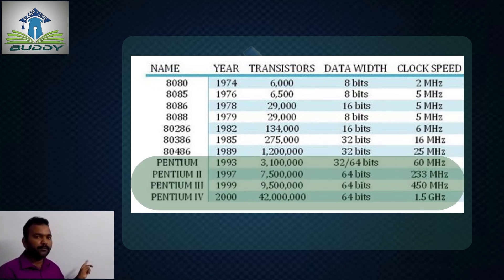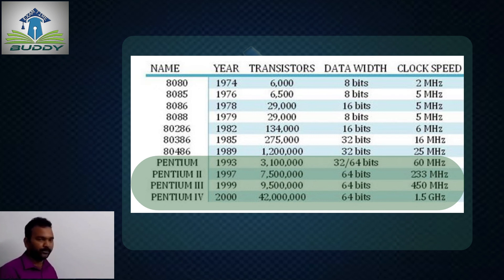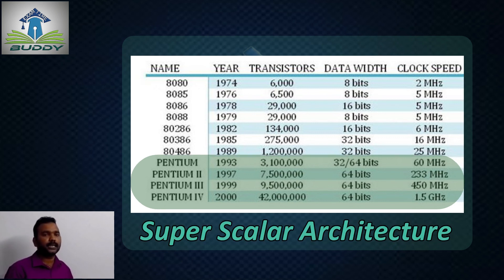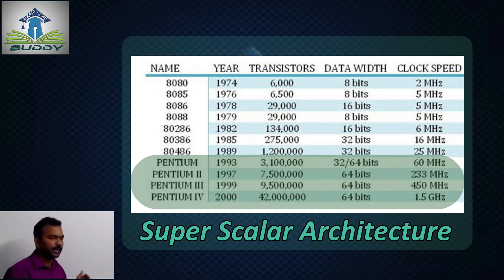In the table, the last set of four categories — Pentium, Pentium 2, Pentium 3, and Pentium 4 — are considered to have a super scalar architecture. We will have a separate session on what super scalar architecture is when we enter into that topic.